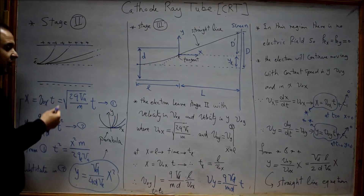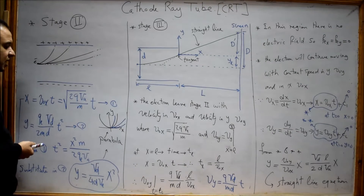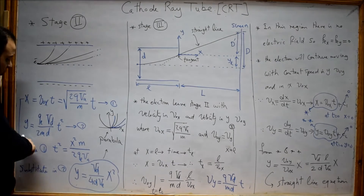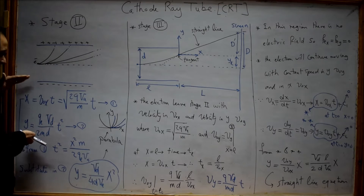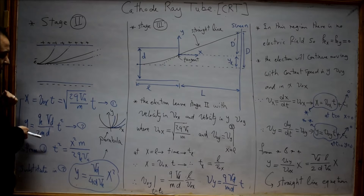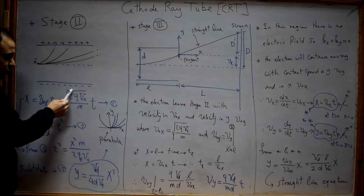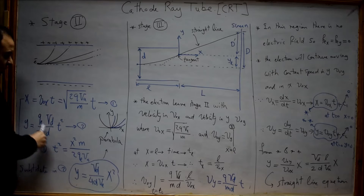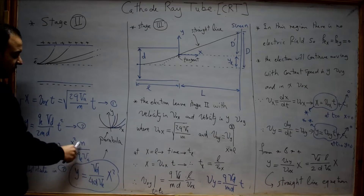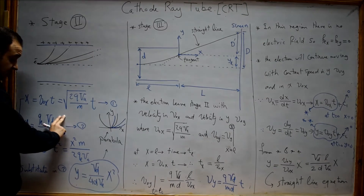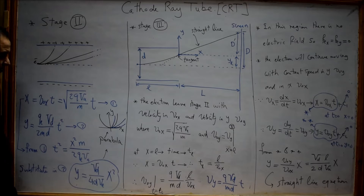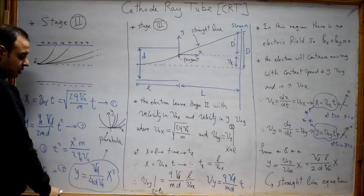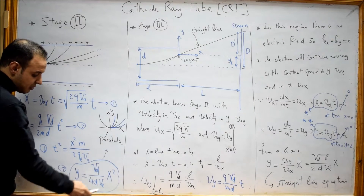How do we get an equation that relates the x and y coordinates of the electron? Between the deflection plates, x can be determined using one equation and y can be determined using another equation. To find a new equation relating x and y without time, we simply square the first equation, so t² will be equal to x² multiplied by the mass of the electron over 2·Q·E·V_A. Then we remove t² from the second equation and substitute this term, giving us a new equation: y equals some constant multiplied by x².